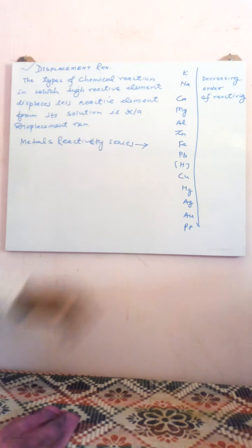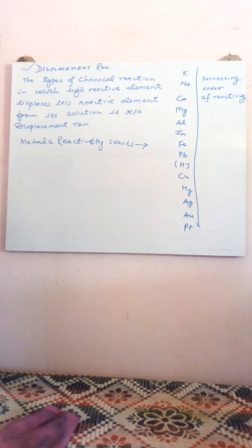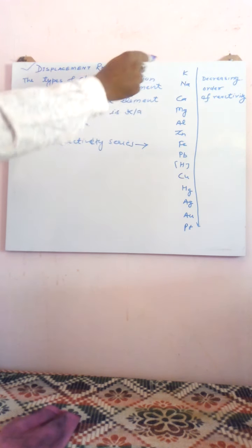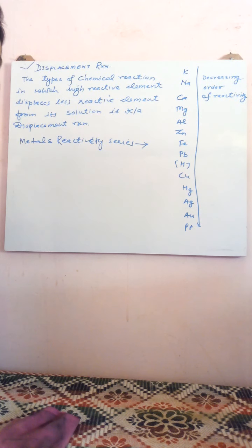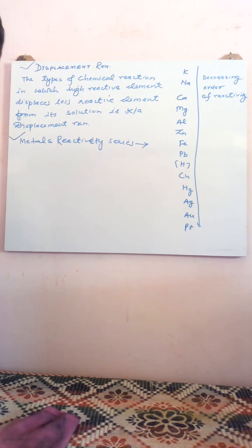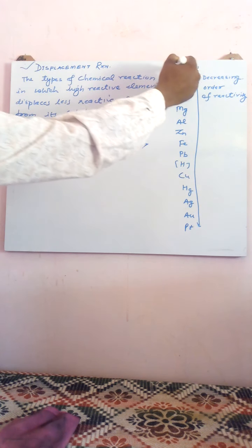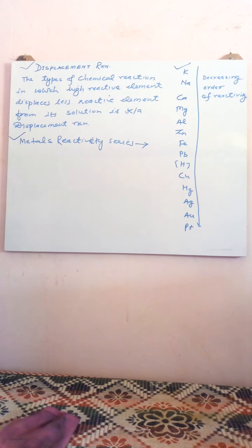These elements are arranged in decreasing order of their reactivity, and this arrangement of different metals in decreasing order of reactivity is known as the metals reactivity series. The elements placed at the top in this reactivity series are highly reactive, while the metals placed at the bottom are less reactive.